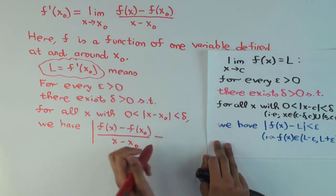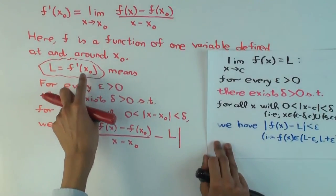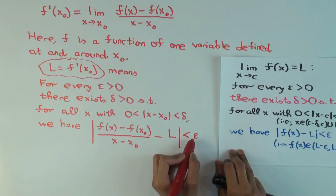Okay. Minus, well, we are claiming the limit is l, so, but this l is the claimed value for f prime x naught. Right? L is less than epsilon. Mm-hmm.